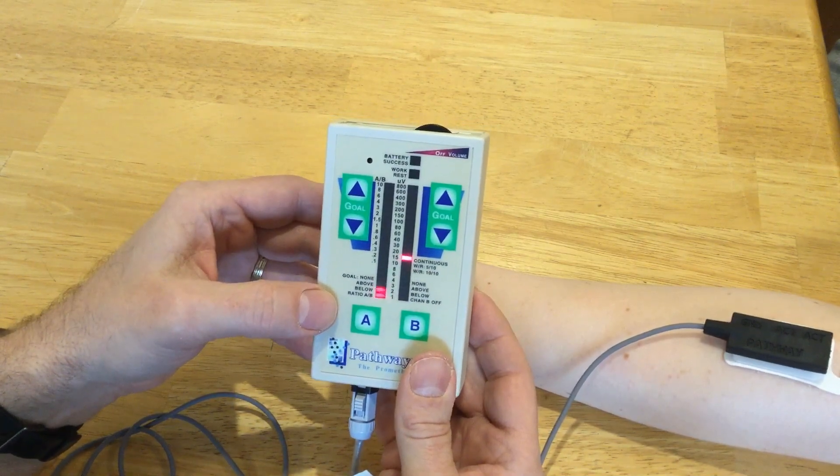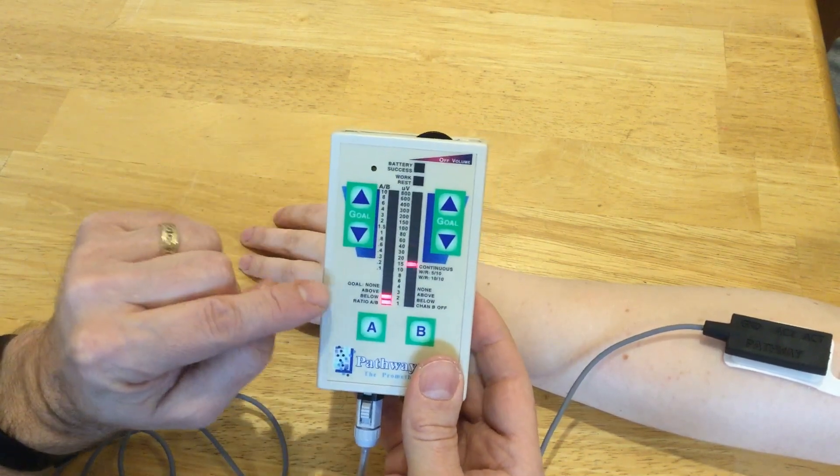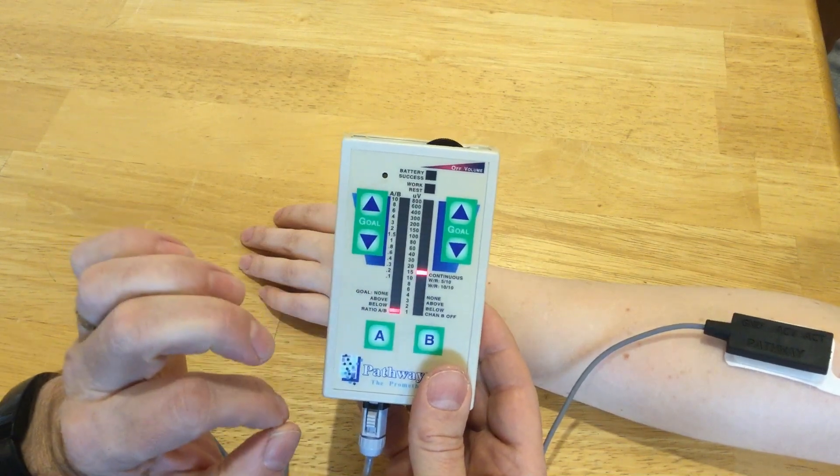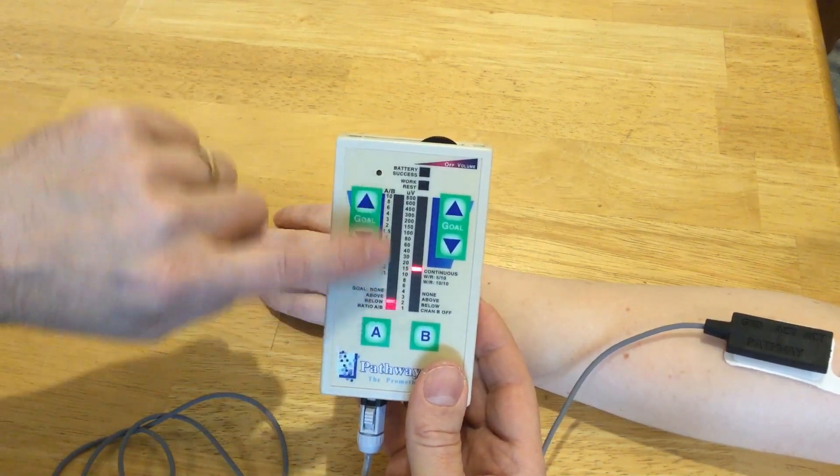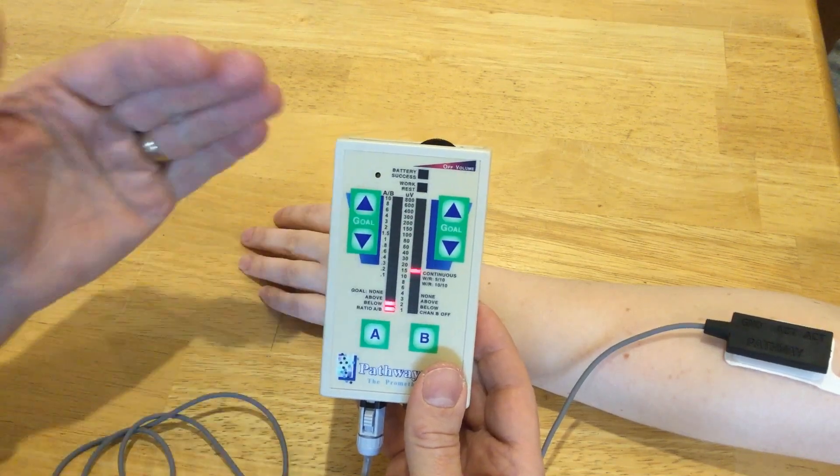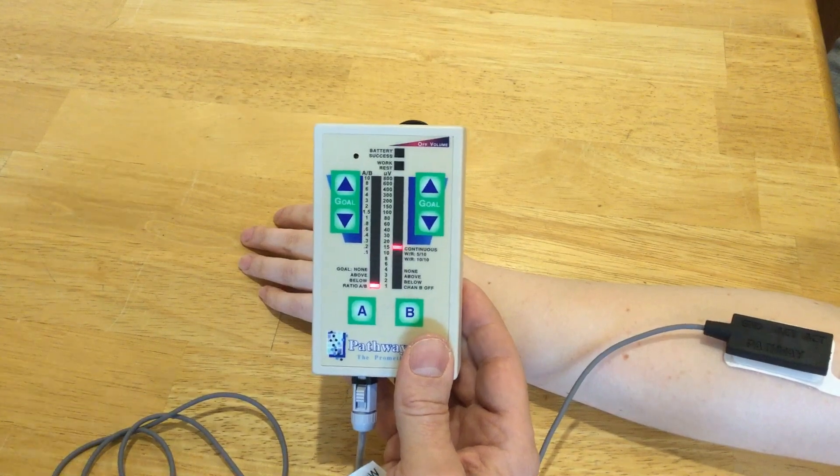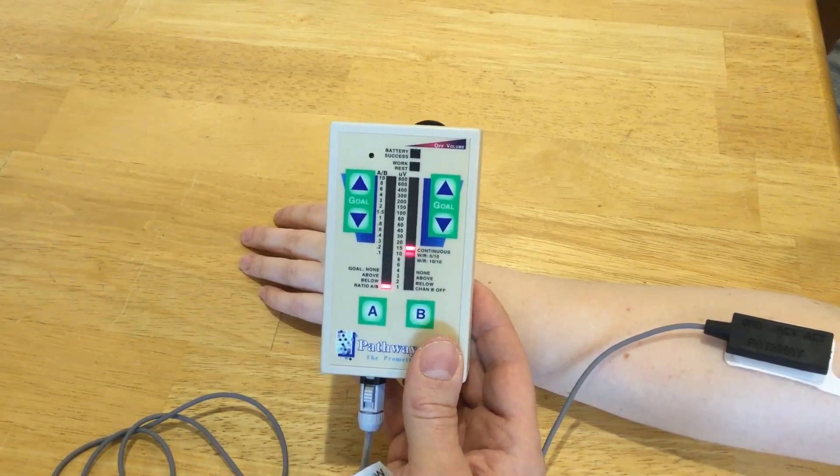The other thing that we can do here is we can set a goal. Right now we don't have a goal, but you can say I want them to go above a certain amount of activity, or I want them to stay below a certain amount of activity if your goal is for them to actually relax a muscle that's firing too much.